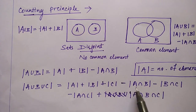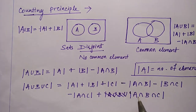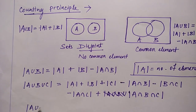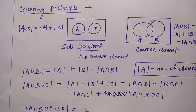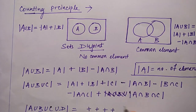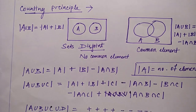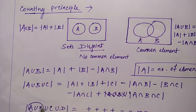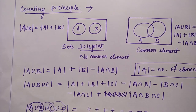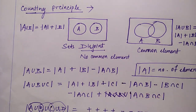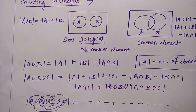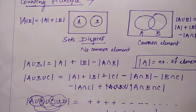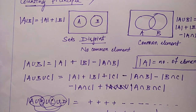What you can observe is that single values have a plus sign, double intersections have a minus sign, and the triple intersection has a plus sign. Extending this pattern: for A∪B∪C∪D, all four single values are positive, all two-way intersections are negative, all three-way intersections are positive, and the last term |A∩B∩C∩D| is negative.